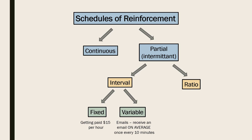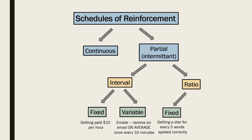The variable interval schedule tends to lead to a fast response rate and slow extinction rate. In a fixed ratio schedule, behaviour is reinforced only after it has occurred a specific number of times — for example, a child receives a star for every five words spelled correctly. This typically leads to a fairly steady response rate and medium extinction rate.